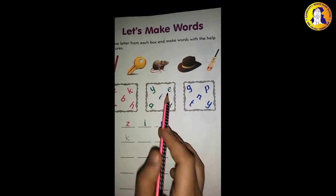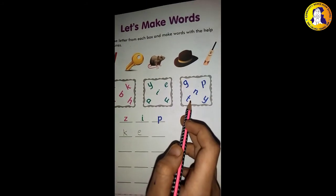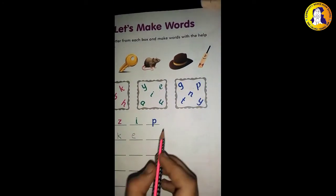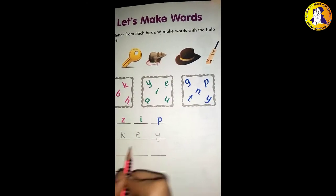In the other box we will have which letter? E. Now in the third box we will have which letter? Y. Look, here is Y. What was this? Key.